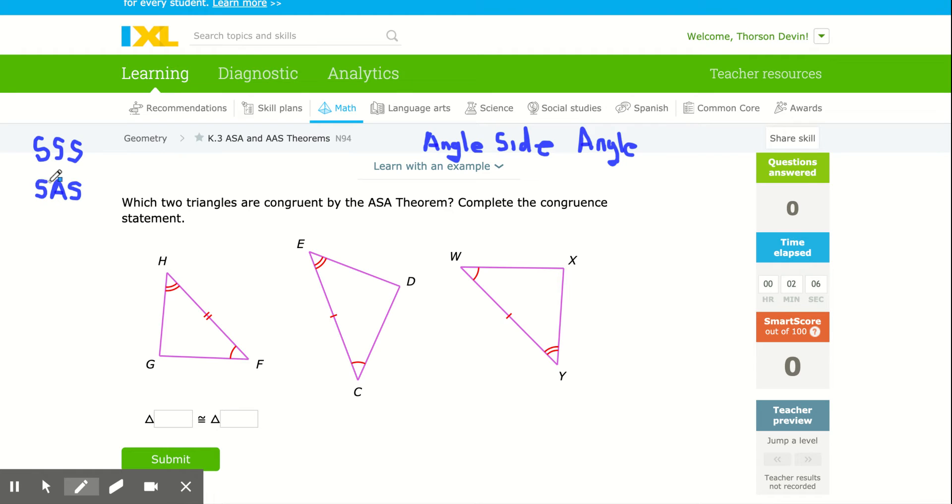We also had side, angle, side, where we had two sides of a triangle and the angle that is formed by the two sides congruent to the other two sides of a triangle and the angle in between, they were congruent.